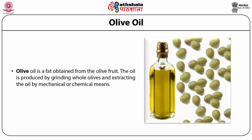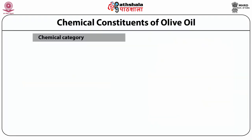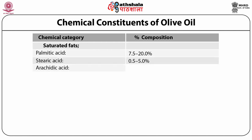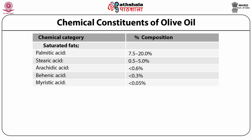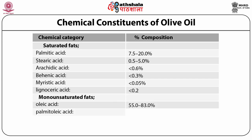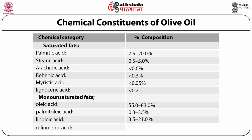Olive oil is basically a fat obtained from the olive fruit. The oil is produced by grinding whole olives and extracting the oil by mechanical or chemical means. Chemical constituents of olive oil: it contains saturated fats including palmitic acid about 7.5 to 20%, stearic acid 0.5 to 5%, arachidic acid less than 0.6%, behenic acid less than 0.3%, myristic acid less than 0.05%, and lignoceric acid less than 0.2%. The monounsaturated fats present are oleic acid about 55 to 83%, palmitoleic acid 0.3 to 3.5%, linoleic acid 3.5 to 21%, and alpha-linolenic acid about less than 1%.